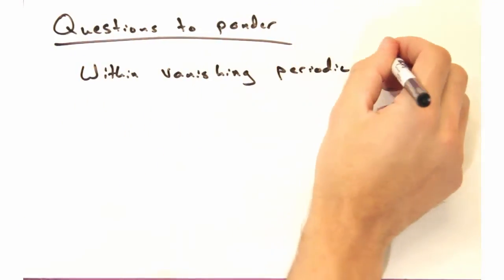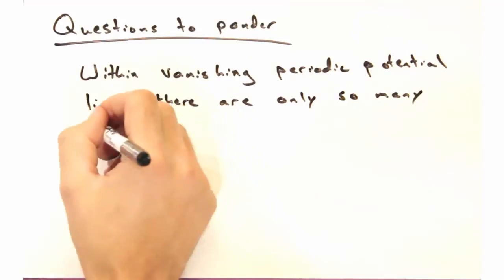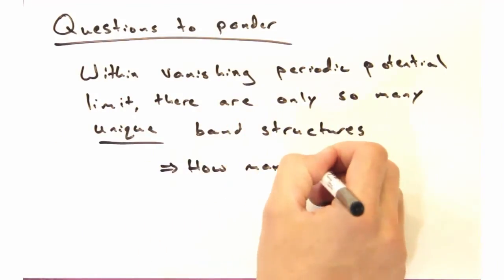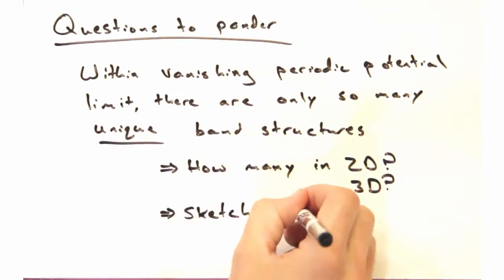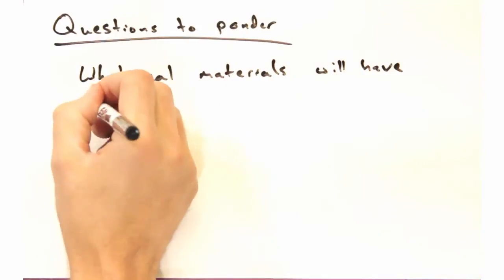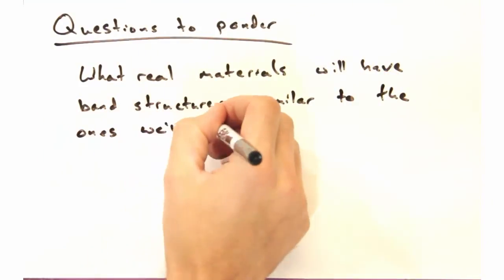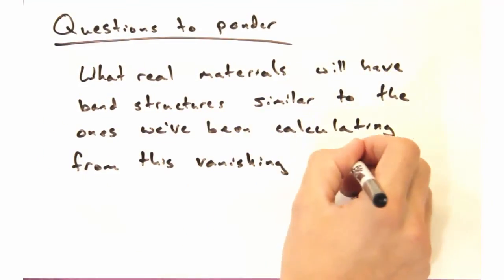And then how about another one? So within this vanishing periodic potential limit, there's only so many unique band structures. How many are there in 2D? How about 3D? Pick one and sketch it for the first few adjacent parabolas. And what real materials do you think will have band structures that are similar to the ones calculated from the vanishing potential?